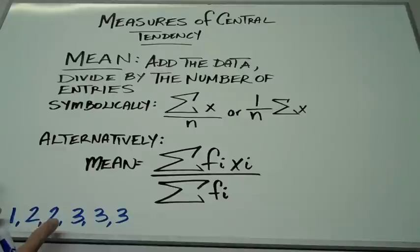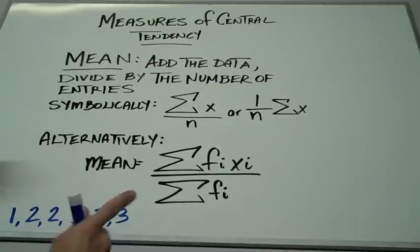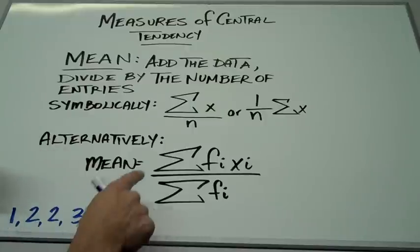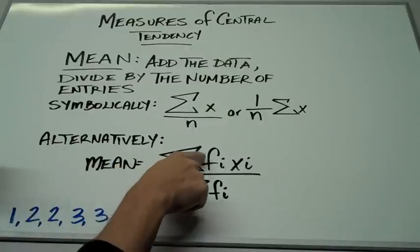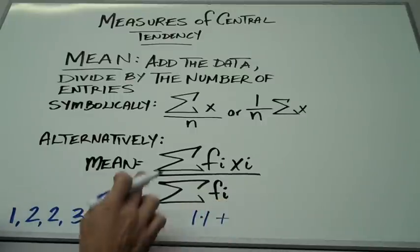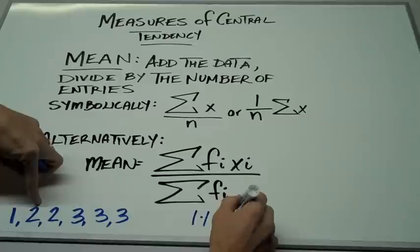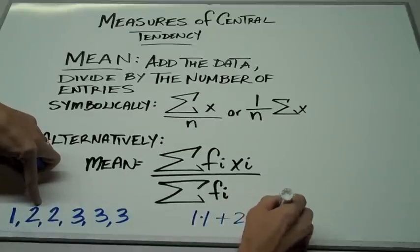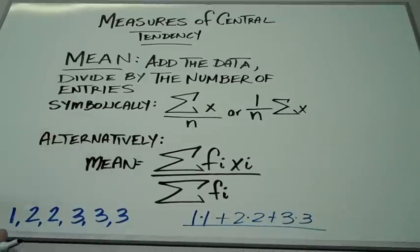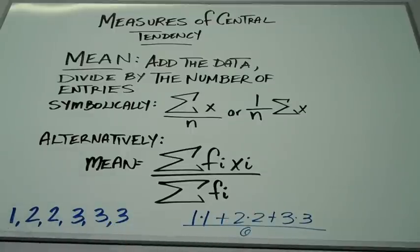For example, if I have the data 1, 2, 2, 3, 3, 3 for ages of children in a preschool, I could add them up and get 14 divided by 6, so I'd get 14 over 6, or 7 over 3, or 2 and 1 third as my average. Alternatively, using the frequency method: the value 1 times its frequency 1, plus the value 2 times its frequency 2, plus the value 3 times its frequency 3, all divided by the sum of the frequencies, which is 1 plus 2 plus 3 equals 6. This still gives 14 over 6 — it's the same concept.